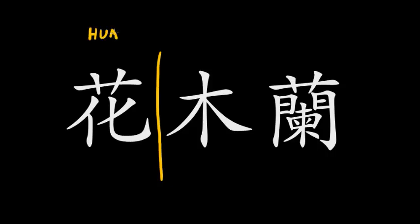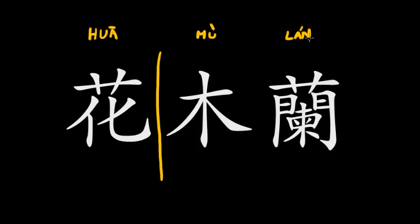The first character is the surname, and as you know, it is Hua. The second two characters are the given name of the girl: this is Mu, and this is Lan. The small marks I'm writing over the syllables are the tones. For those who don't speak Chinese, Chinese has four tones, and each syllable has to be pronounced in a certain tone — Hua, Mu, and Lan.